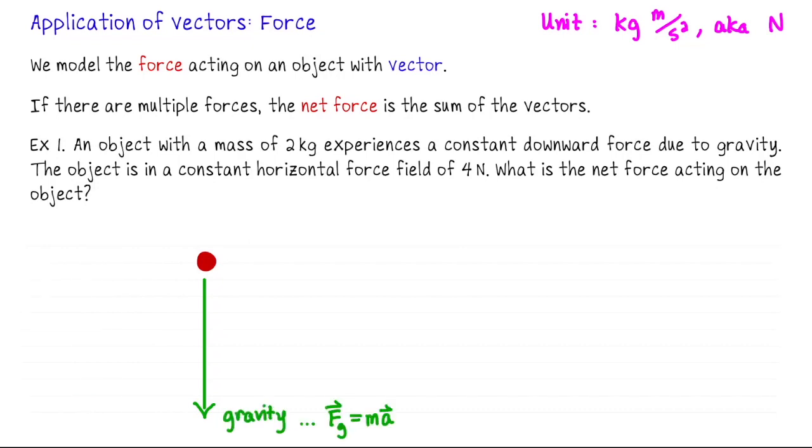Now the force downwards due to gravity, from Newton's second law, that's mass times acceleration due to gravity. The mass of this object is 2 kilograms, and then the acceleration due to gravity is approximately negative 9.8 meters per second squared. Some people like negative 9.81 a little bit more. And then we use a negative sign to indicate that the motion is downwards.